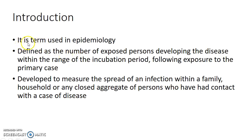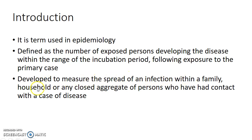Secondary attack rate is a term used in epidemiology. It is defined as the number of exposed persons developing the disease within the range of the incubation period following exposure to the primary case. It was developed to measure the spread of an infection within a family, household, or any closed aggregate of persons who have had contact with the case of disease.